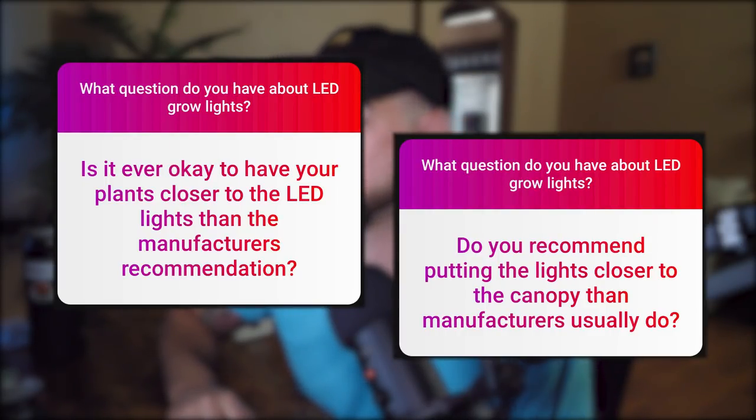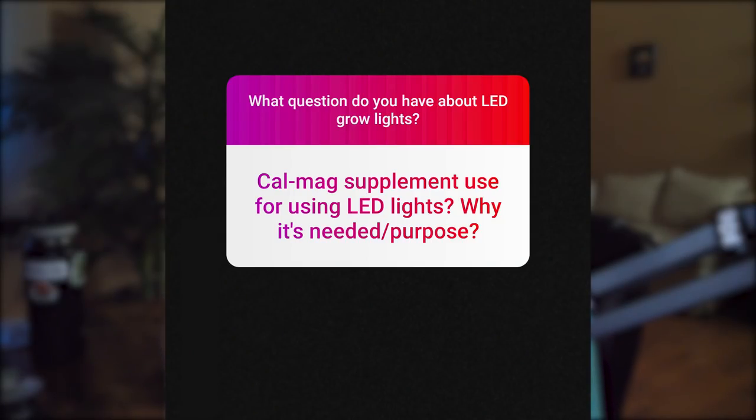Is it ever okay to have your plants closer to the LED grow light than the manufacturer recommends? Yes, but it's going to be rare. Good grow light companies provide accurate PAR charts you can go by. Unfortunately, many companies on Amazon only give one dead-center PAR measurement, and some of those numbers are inaccurate — some companies won't hesitate to lie and exaggerate. If a company isn't well known or doesn't show a full PAR chart, having the light closer might be worth exploring, but most reputable companies provide accurate measurements.